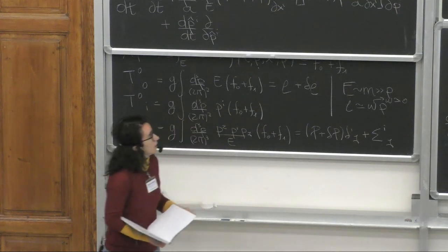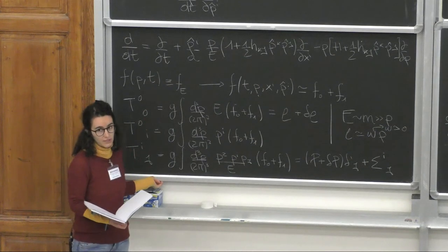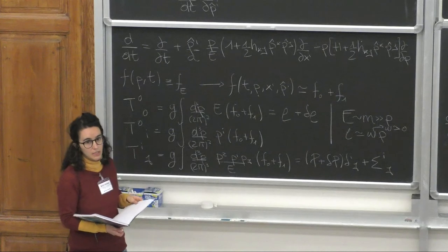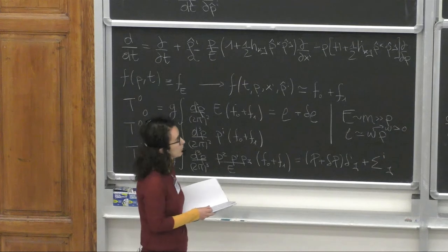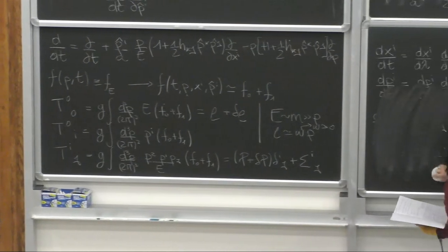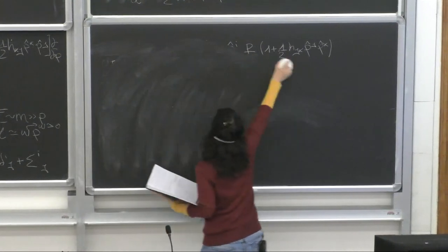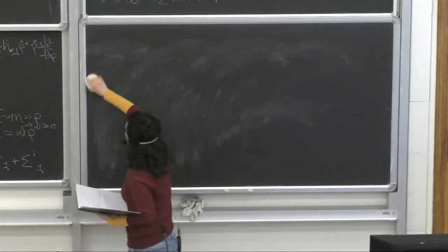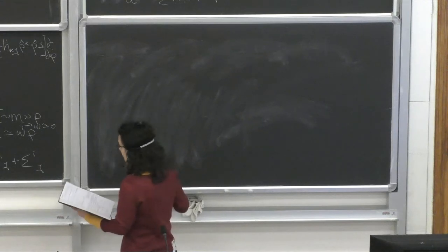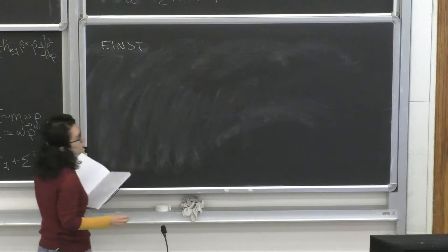We now have the perturbed Liouville operators, the perturbed distribution function, and the perturbed stress-energy tensor. Putting all these ingredients together, we can write down the Einstein equations and the full Boltzmann equations needed to compute the dynamics in the perturbed universe — the equations needed to solve for the transfer functions. I won't derive the Einstein equations in detail, as you can find the derivation in all standard textbooks. For scalar perturbations, we expect two equations for the two degrees of freedom.